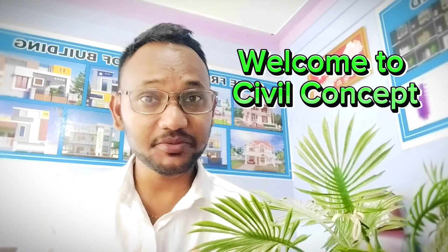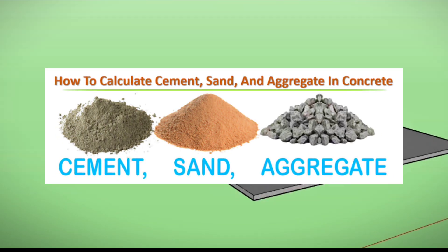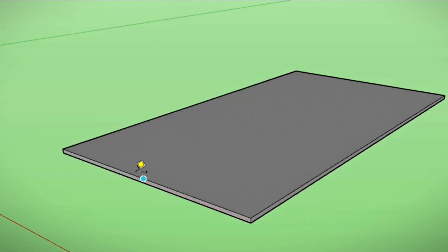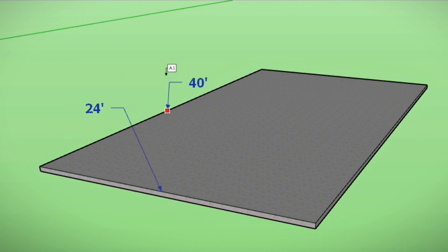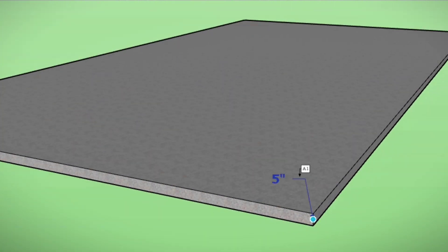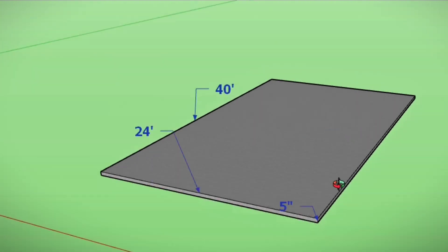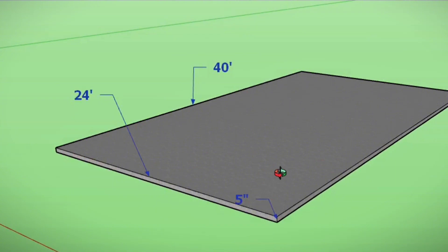Hello guys, welcome to Civil Concept. In this video I'm going to show you how to calculate cement, sand, and aggregate for concrete in a slab. This slab has a width of 24 feet, a length of 40 feet, and a thickness of 5 inches. We are going to calculate the cement, sand, and aggregate for this slab.